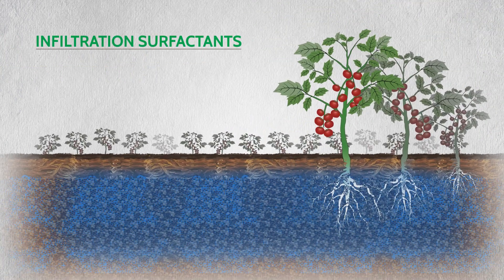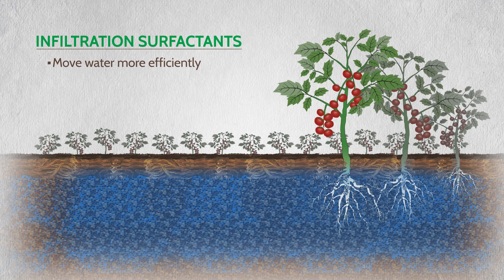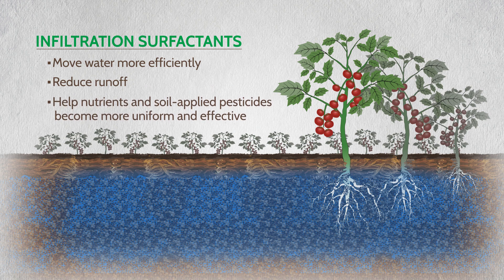As water treated with an infiltration surfactant moves more efficiently into the soil, runoff is reduced and nutrients and soil-applied pesticides become more uniform and effective.